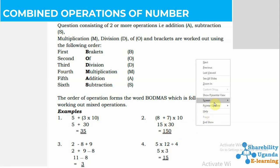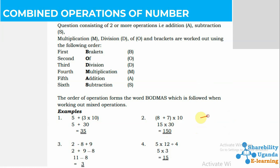In example 2, we come up with 150. This came about because we have 8 plus 7, which is 15, then 15 times 10. When we multiply 15 times 10, we get 150.